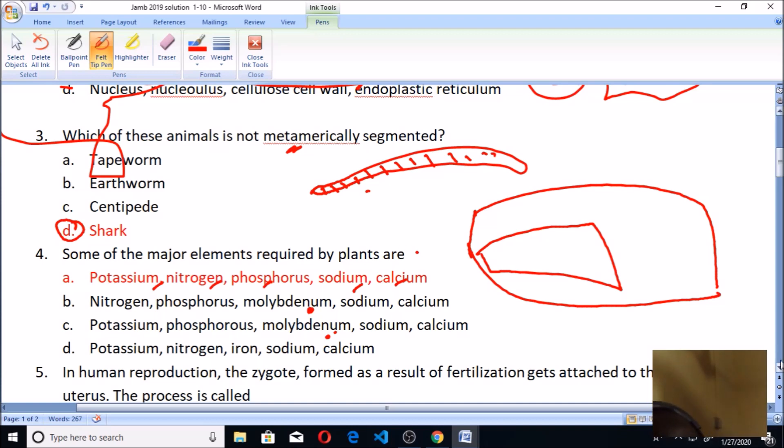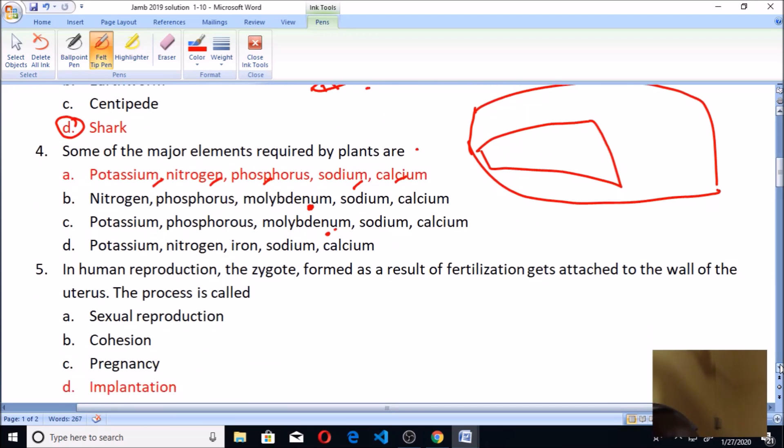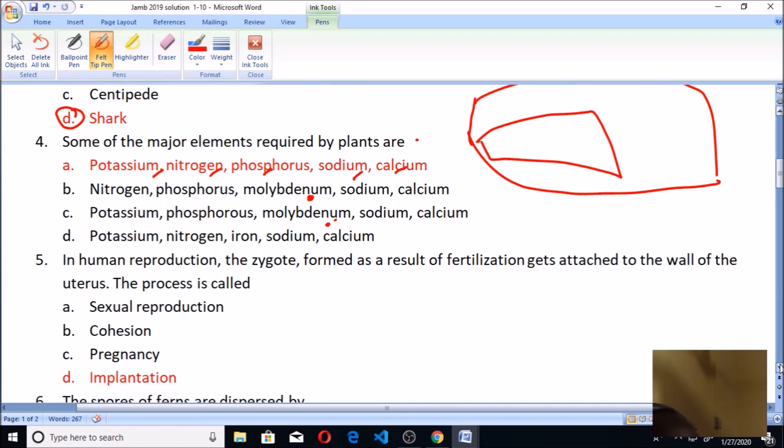Let's look at number five question. In human reproduction, the zygote formed as a result of fertilization gets attached to the wall of the uterus. The process is called implantation. Implantation is actually the process whereby the zygote gets attached to the uterus. Pregnancy you all know is when the male and female reproductive cells get together. Sexual reproduction is when you get offspring by a man coming in contact with a woman. Cohesion is simply when two things are brought together. So implantation is actually in the uterus. The fetus, it's still very small, and through the umbilical cord it gets attached to the uterus, and that makes implantation the answer to this question.